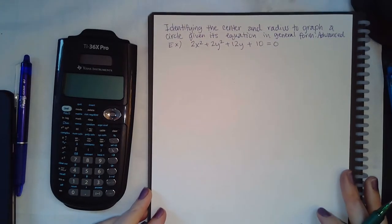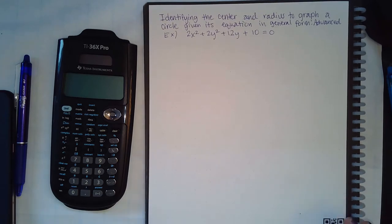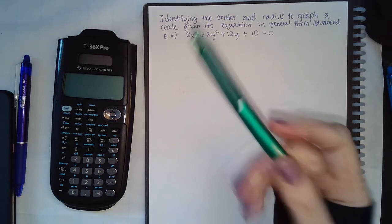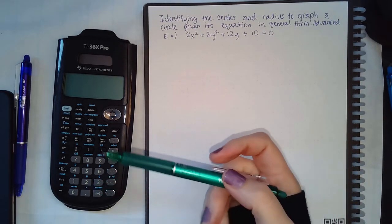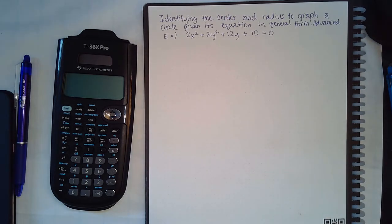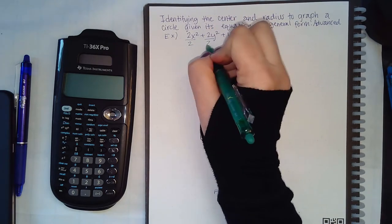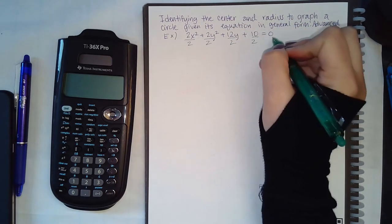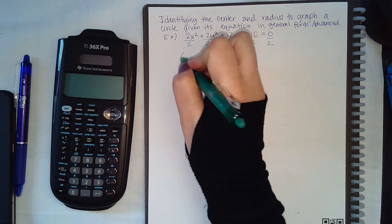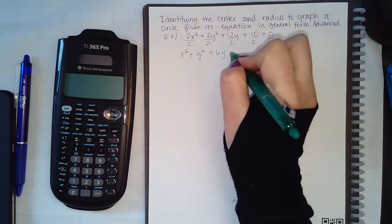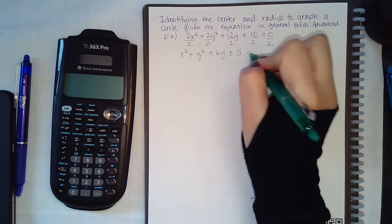The next example is a bit more complicated. The first thing I notice is there is a coefficient of 2 in front, and remember: for a circle in standard form there cannot be a leading coefficient. So I divide every single term by 2, giving x squared plus y squared plus 6y plus 5 equals 0.